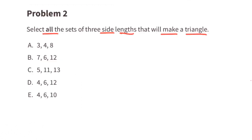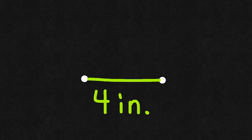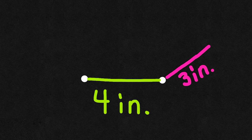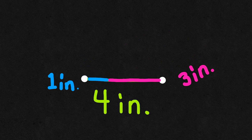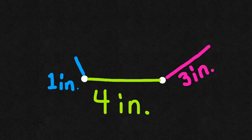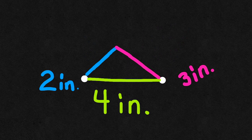Problem number 2: select all the sets of three side lengths that would make a triangle. To determine this, take the longest side length first. The sum of the other two side lengths must be greater than it. For example, if the longest side is 4 inches and the sum is 3 plus 1 equals 4, those lines just form a straight 4-inch line — not a triangle. But if the sum is 3 plus 2 equals 5, which is greater than 4, they meet to form a triangle.